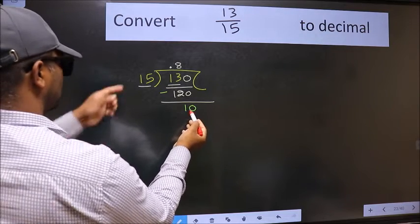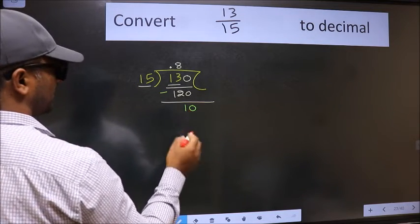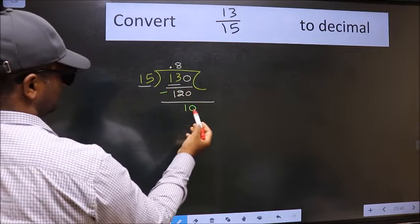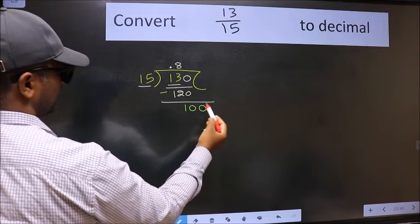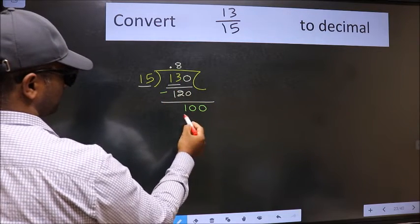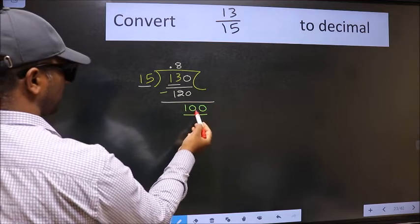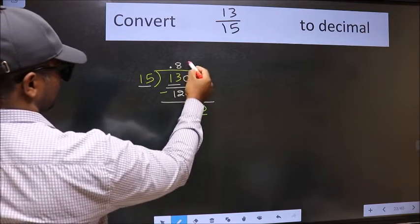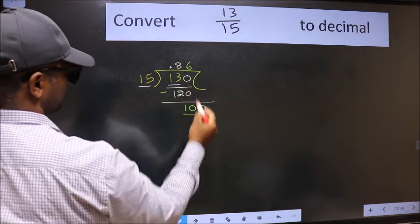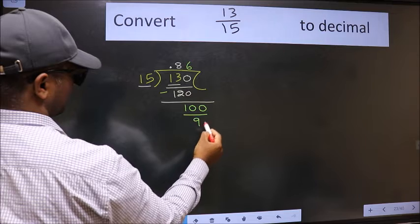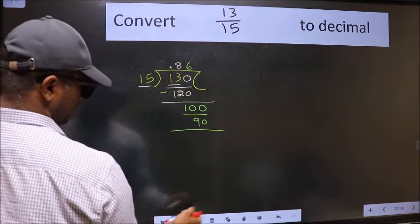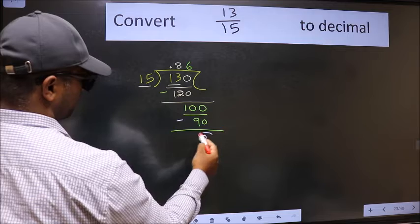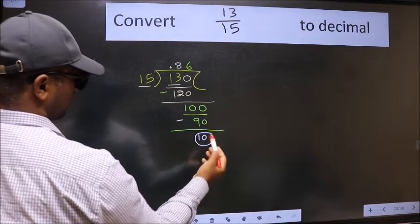10 is smaller than 15 and we already have the decimal, so this time we can directly take 0. So 100. Our number close to 100 in the 15 times table is 15 sixes, which is 90. Now we should subtract. We get 10 again.